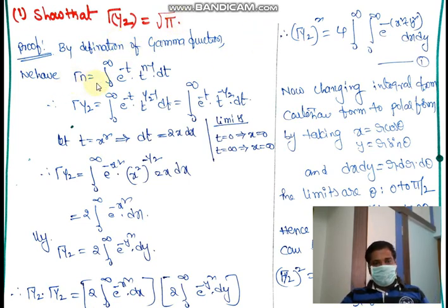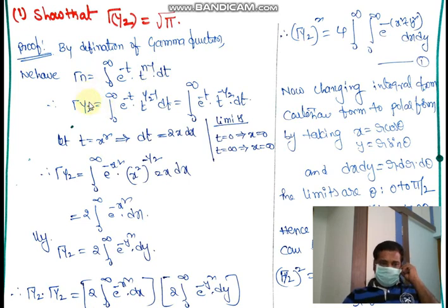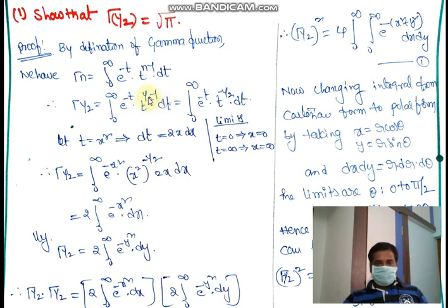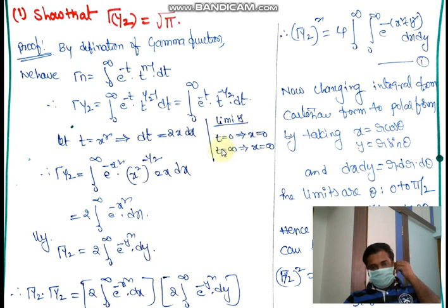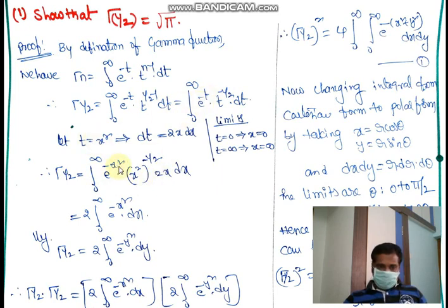By the definition of the gamma function, Γ(n) = ∫₀^∞ e^(−t) · t^(n−1) dt. Put n = 1/2: Γ(1/2) = ∫₀^∞ e^(−t) · t^(−1/2) dt. Now take the substitution t = x², so dt = 2x dx. The limits remain 0 to ∞. Substituting: Γ(1/2) = 2 ∫₀^∞ e^(−x²) dx.